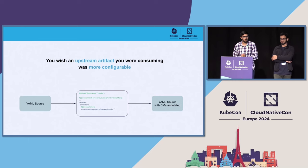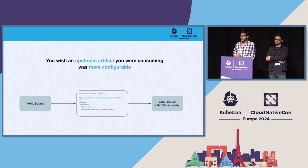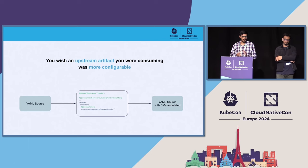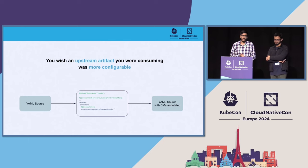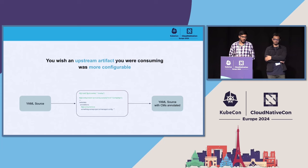So, for example, if you're using a Helm chart, you can use YTT as a post-rendering tool, and you can make your Helm chart a little bit more configurable, and you get valid YAML at the end of the day which you use to deploy.